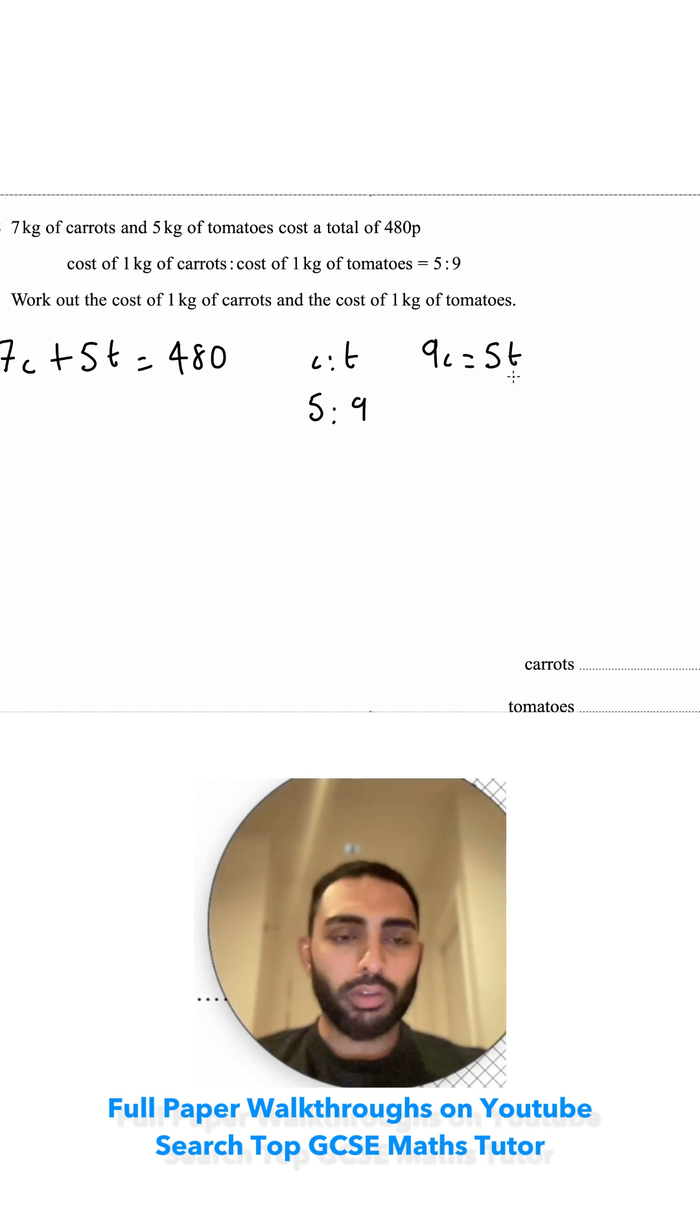You might spot something here. You've got this 5t here and you've got this 5t here, so it might be helpful for later on. Work out the cost of 1 kilo of carrots and the cost of 1 kilo of tomatoes.